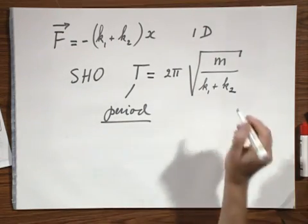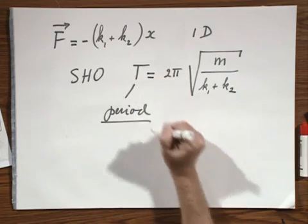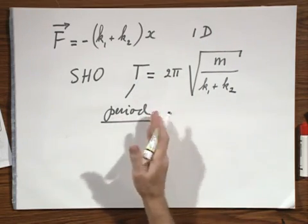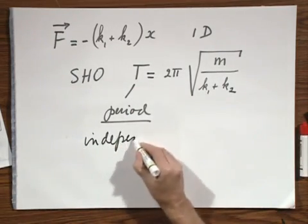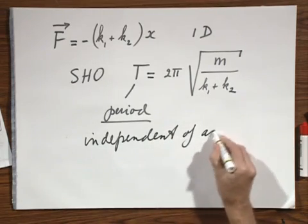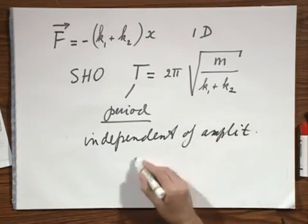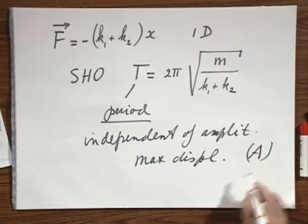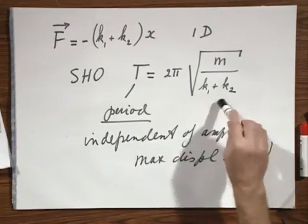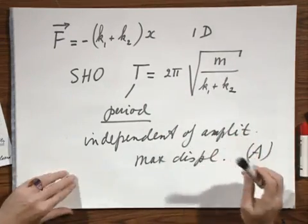It is not so intuitive that this period T is independent of the displacement A. A we call the amplitude. I take the object, displace it to one side, release it, and it starts to oscillate. This period is independent of the amplitude. The amplitude is the maximum displacement from equilibrium — in this particular case, A. It is not intuitive that the period is independent of amplitude, but I will return to this.